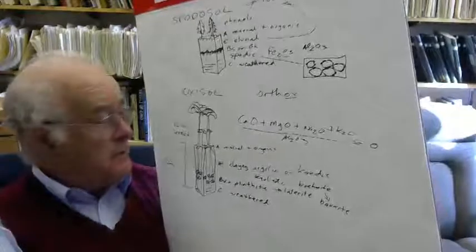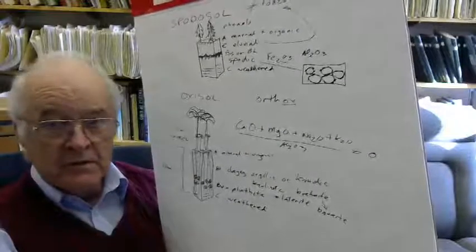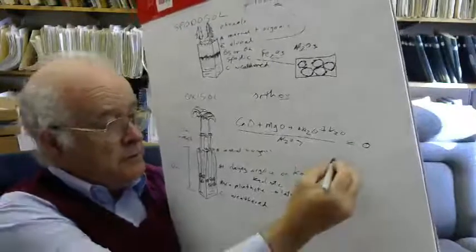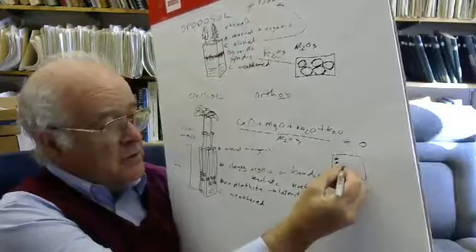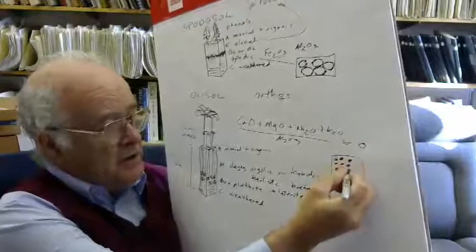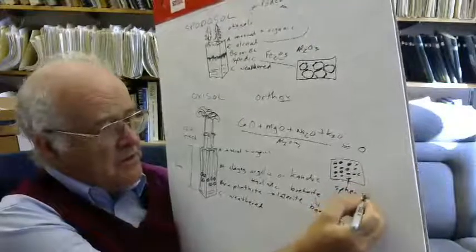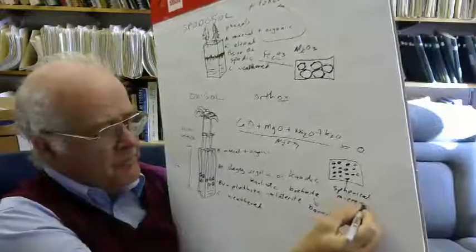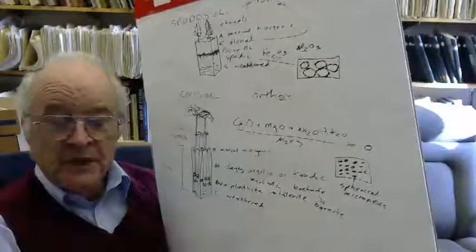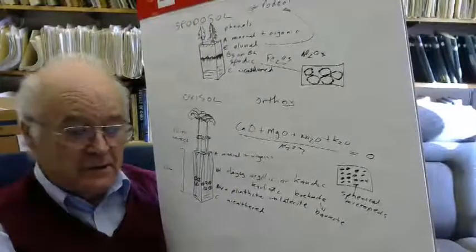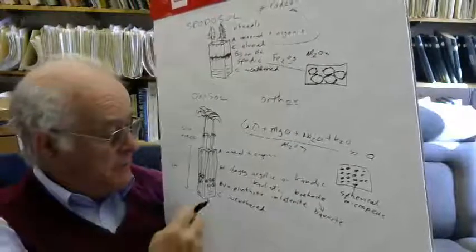These oxisols form largely in the zone where there are lots of termites. It's pretty obvious when you make a thin section of one of these that there are lots of tiny, one to two millimeter rounded pellets of highly oxidized material — called spherical micropeds. These are basically the oral and fecal pellets of termites. It's apparent when you start thin-sectioning and looking in detail at the textures, all the way down, that these soils have gone through the guts of termites several times over.